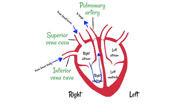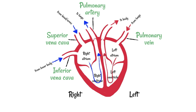Pulmonary is just an adjective that describes something relating to the lungs, and an artery is something that leaves the heart — artery, A for away. If the pulmonary artery takes things away from the lungs, then the thing that comes from the lungs and into the heart is the pulmonary vein. Veins are things that enter the heart. The blood is going to go through the left atrium and then through the left ventricle, and leave there to go to the rest of the body.